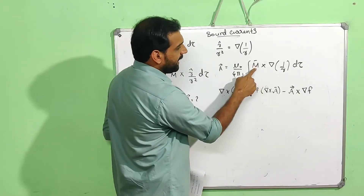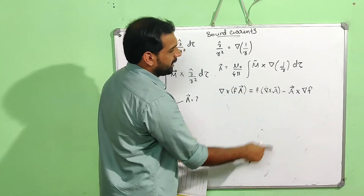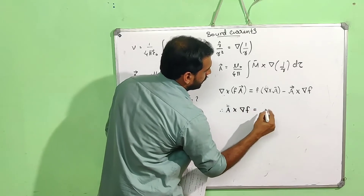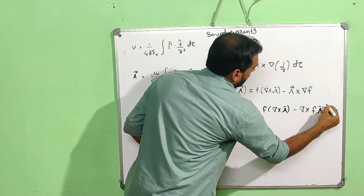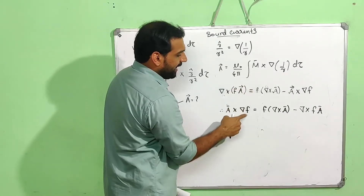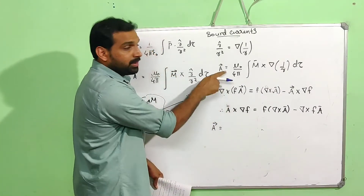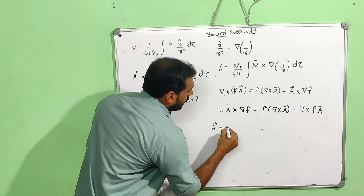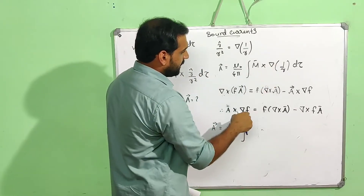We need to use this identity. Here A is the vector M and f is (1/r). Rearranging: A×∇f = f(∇×A) − ∇×(fA). Therefore, M×∇(1/r) = (1/r)(∇×M) − ∇×(M/r). The magnetic vector potential becomes A = (μ₀/4π) ∫ [(1/r)(∇×M) − ∇×(M/r)] dτ.